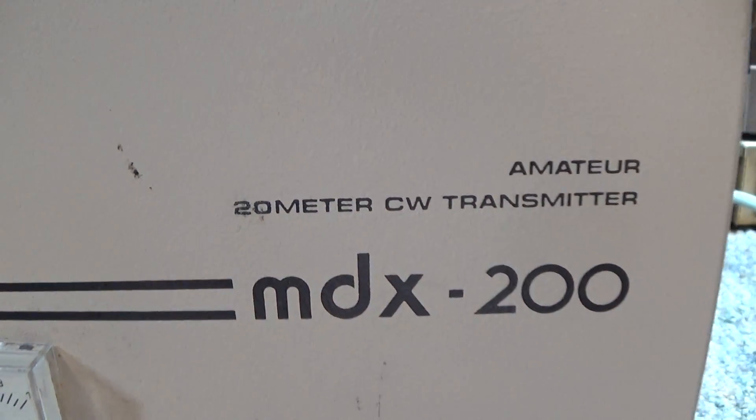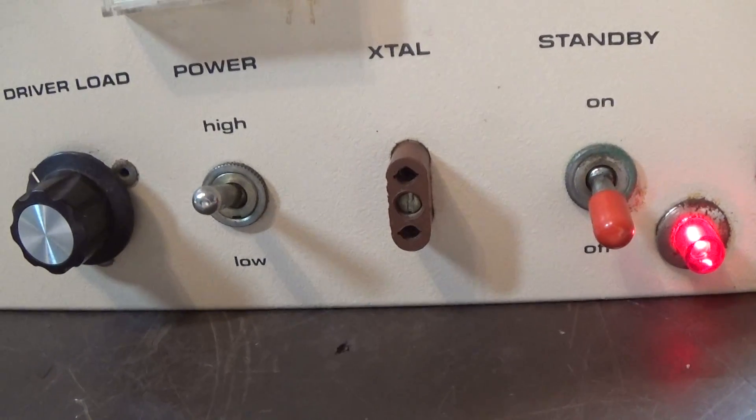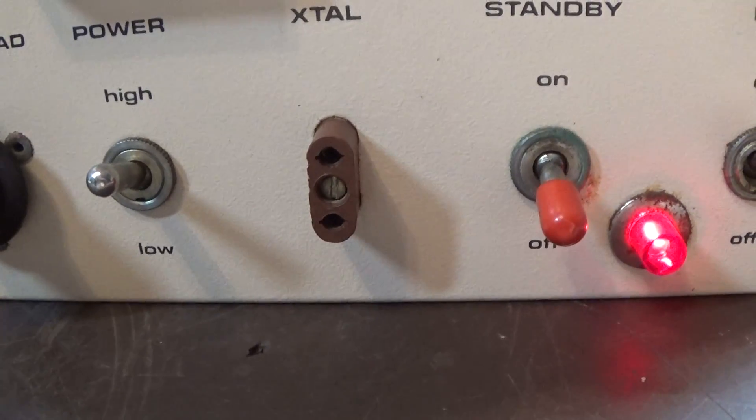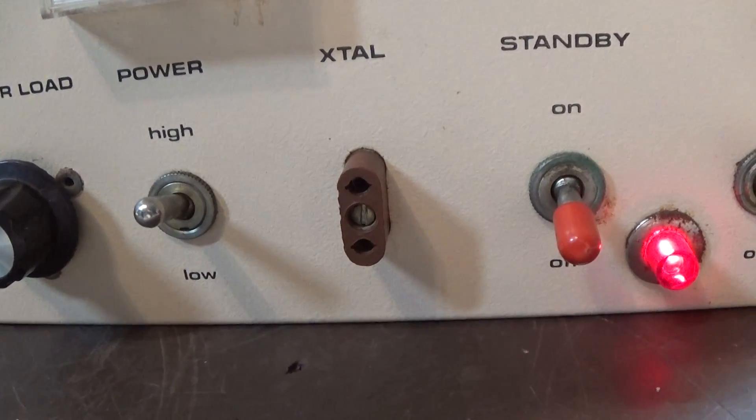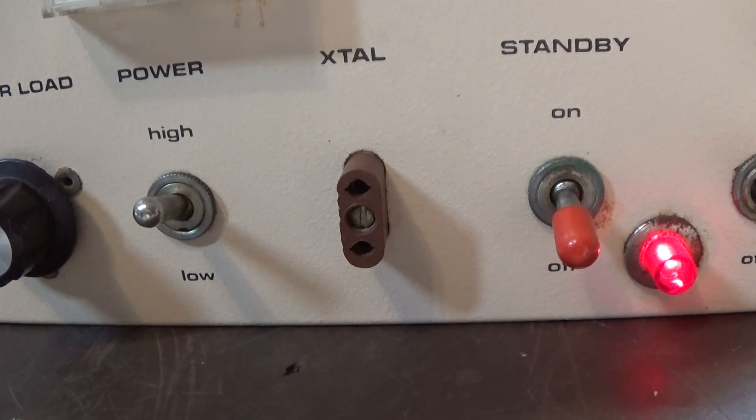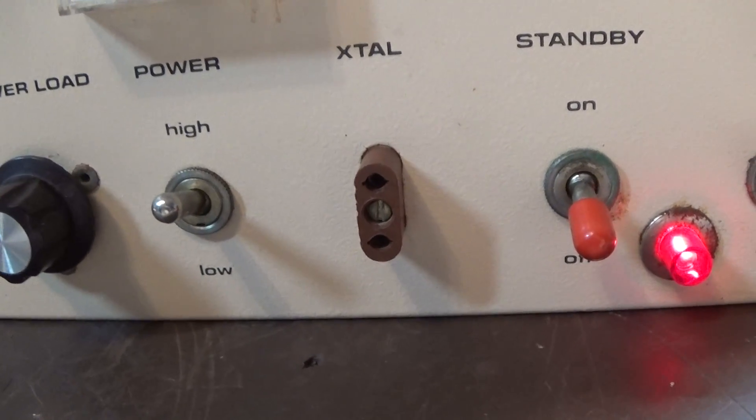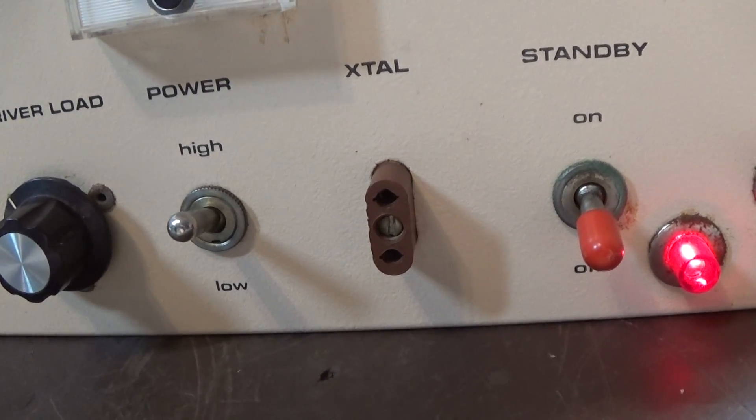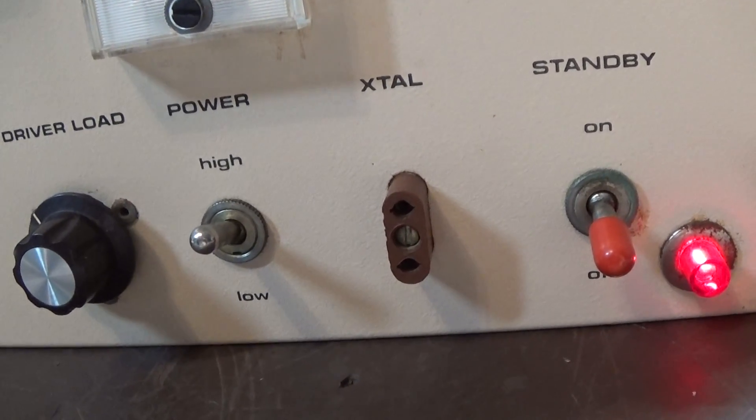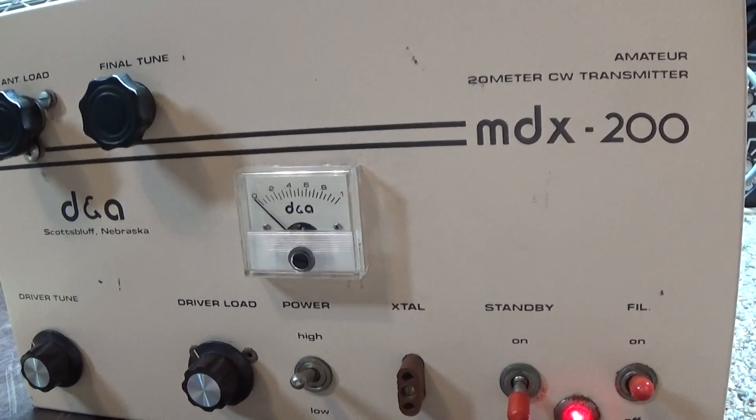They took one of the driver tubes and converted it into a pre-driver or oscillator tube, and then added a single crystal bank there. So you would theoretically plug in a crystal for 20 meters and the crystal would be driven by the one oscillator tube, and then the oscillator would drive the three regular driver tubes into the four outputs. DNA sometimes would include a manual on how to convert this to an amplifier.